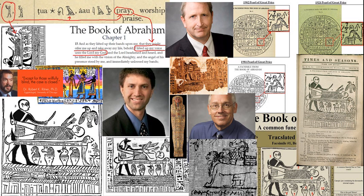In part 1, we went over in some detail, but I hope with some clarity, regarding the two main theories that faithful Mormons still maintain regarding the Book of Abraham. They are divided primarily into two camps: one is the Missing Scroll Theory camp, and the other is the Catalyst Theory camp. Both theories suffer from being untenable, but they are untenable in different ways.